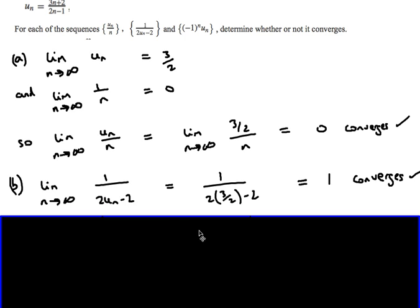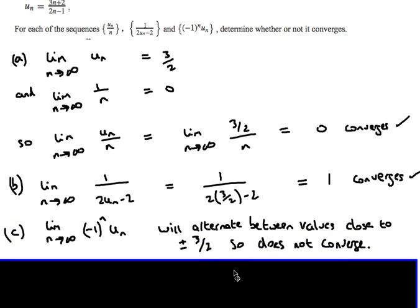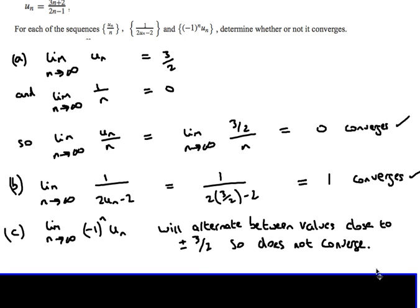For the second sequence, the limit of u_n is 3 over 2, so as n approaches infinity we get one half times bracket 3 over 2 minus 2, which simplifies to 1. Therefore that sequence also converges. For the third sequence, the factor of minus 1 to the power n means the terms alternate between positive and negative values close to 3 over 2, so obviously that sequence does not converge.